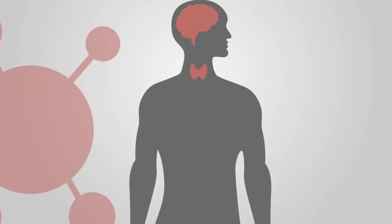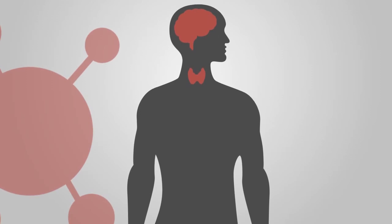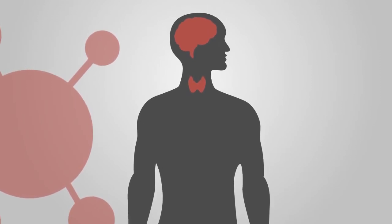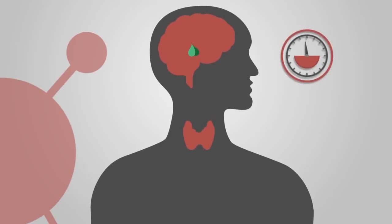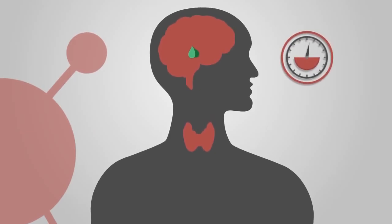The thyroid's production of T3 and T4 is controlled by another small gland in the brain called the pituitary gland. The pituitary works like a thermostat, constantly maintaining a balance in the body's hormone levels.